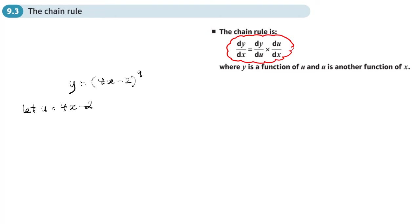So I'm saying, let the thing in the bracket equal u. What happens is it now becomes y equals u to the power 9. If I differentiate that, I get dy/du, because it's not x anymore. And dy/du is 9u to the power 8.